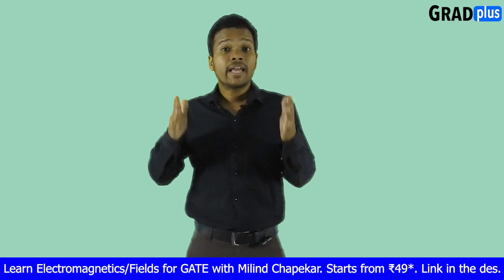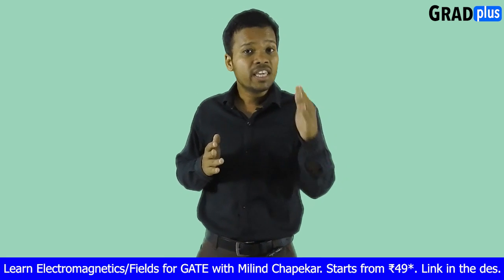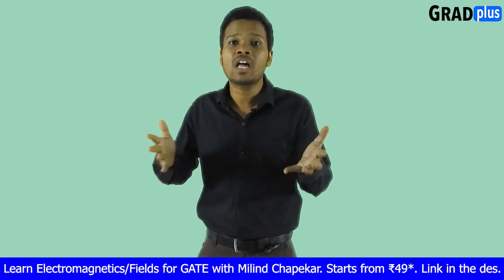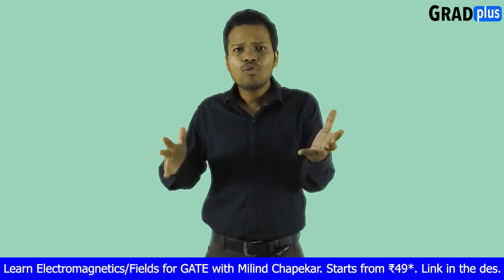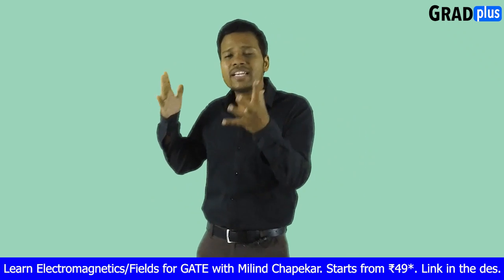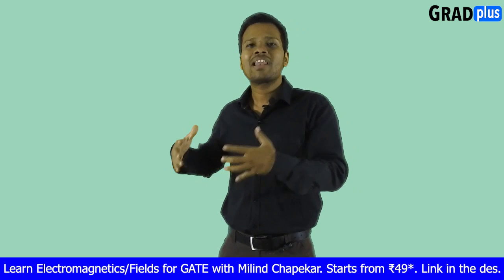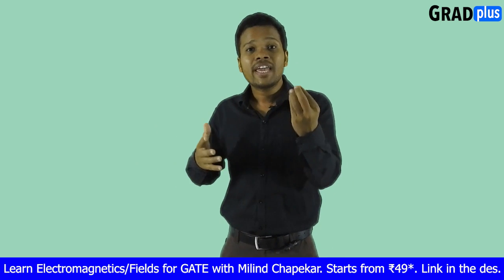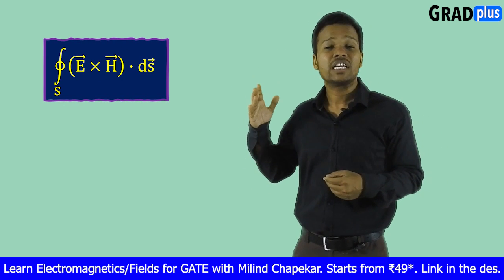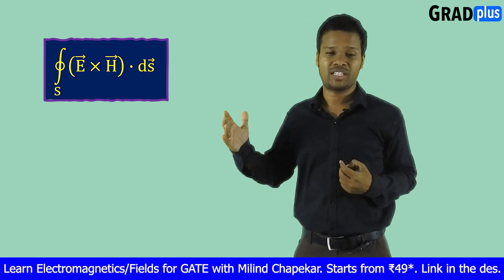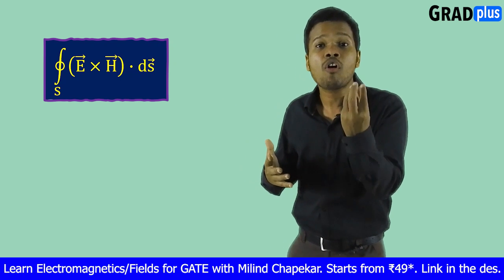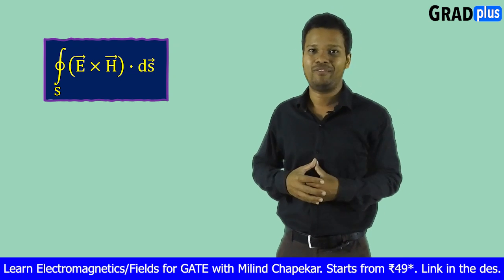We know that the electromagnetic wave — the EM wave — carries electromagnetic energy or power along with it. And we can prove, starting from the basic Maxwell's equations and giving some analytical treatment, that the closed surface integration of E cross H gives us the power of the uniform plane wave, the power of the electromagnetic wave.